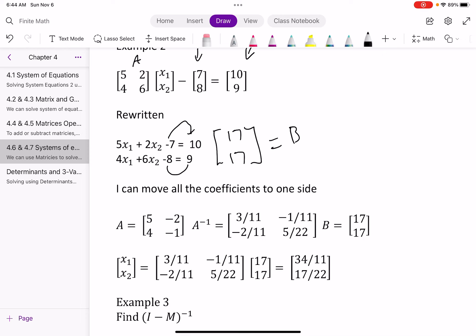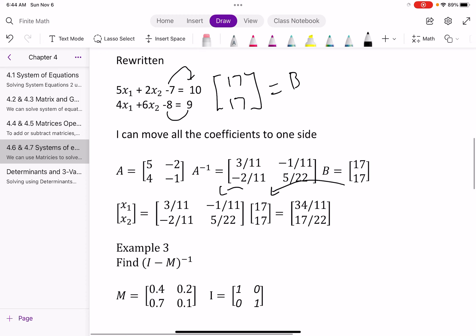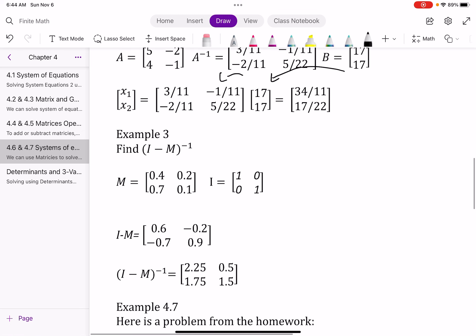And again, use previous lessons to find my inverse, and now I have my inverse, and I have my B. I multiply my inverse times my B, and I get my answer. I could also find this I minus M inverse. We're going to use this a lot in 4.7, and then I talk about how we find I minus M in 4.7.